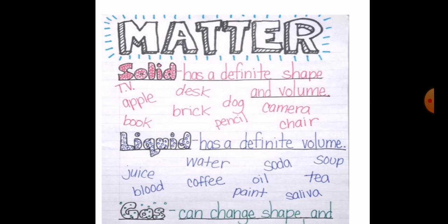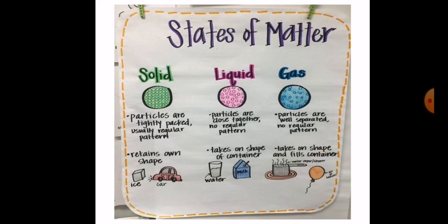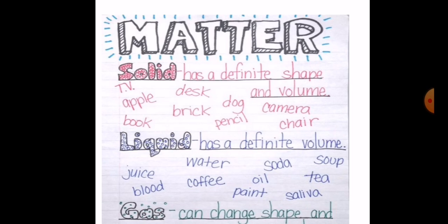Liquid does not have a fixed shape — it takes the shape of its container. If you put water in a cup, it takes the shape of the cup. If you put it in a plate, it takes the shape of the plate. If you put it in a plastic bag, it takes the shape of the plastic bag. Examples of liquids include water, coffee, soda, oil, soap, tea, and juice.